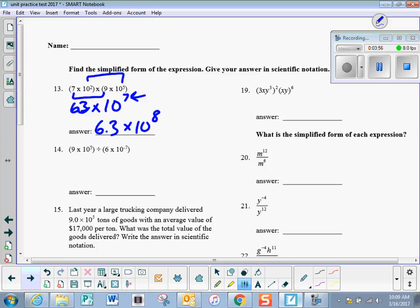Number 14, we're dividing. So that's just like writing this. So 9 divided by 6 is 1.5, and then times 10 to the 5 minus negative 7, minus negative is plus a positive, would be 1.5 times 10 to the 12th.